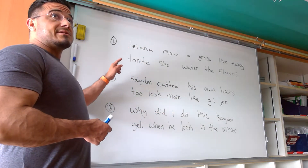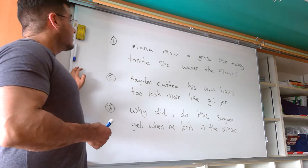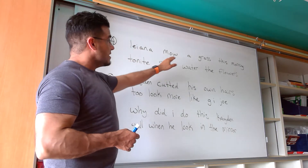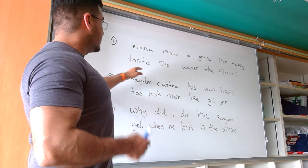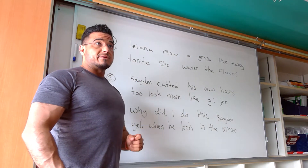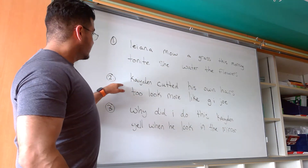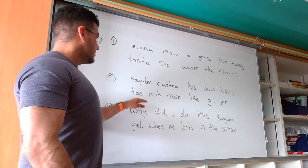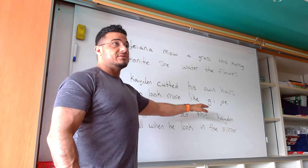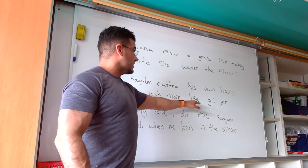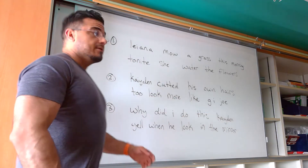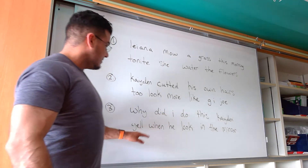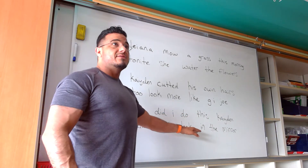Alright, sentence number one: Leona mow a grass this morning. Tonight she water the flowers. Sentence number two: Caden cutted his own hairs to look more like G.I. Joe. And sentence number three: Why did I do this? Caden yelled when he looked in the mirror.